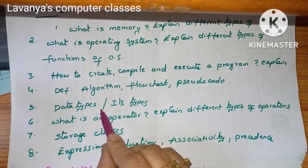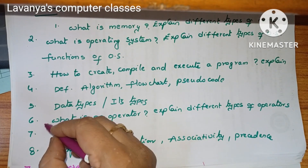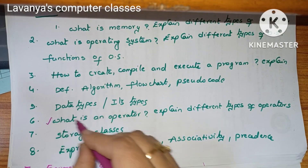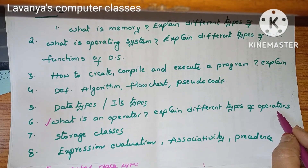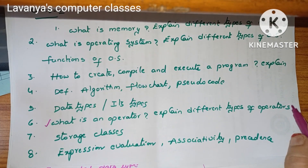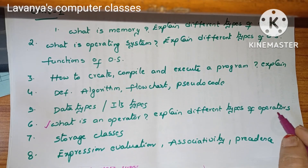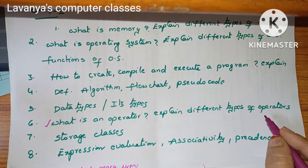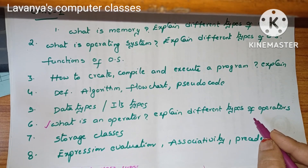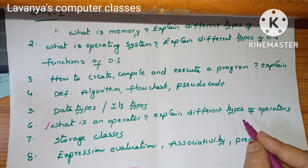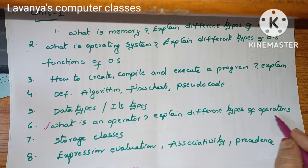What is a data type? Explain different types of data types. Next, a very very important question: what is an operator? Explain different types of operators. There are many operators — bitwise operators, conditional operators (also called ternary operators), and relational and assignment operators. Concentrate on the operators.